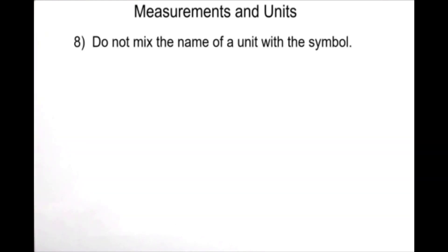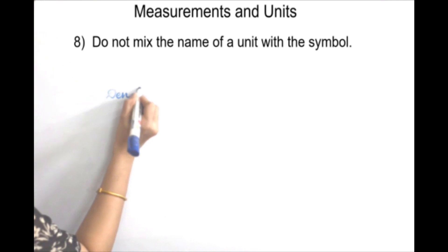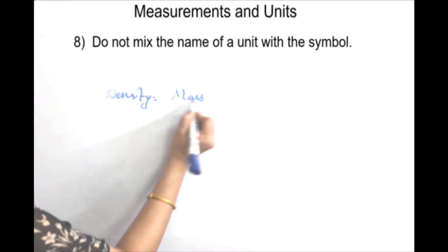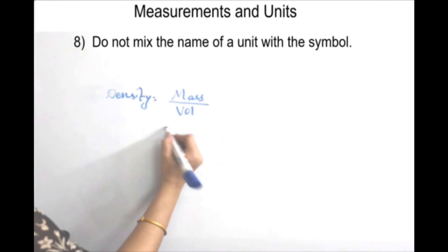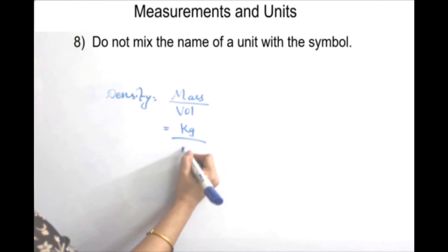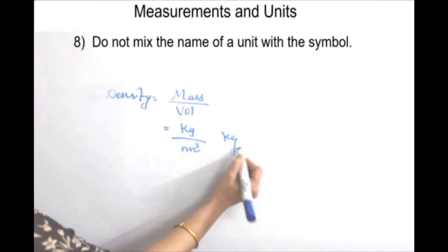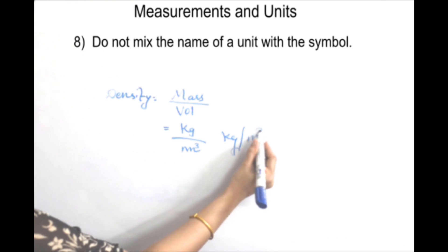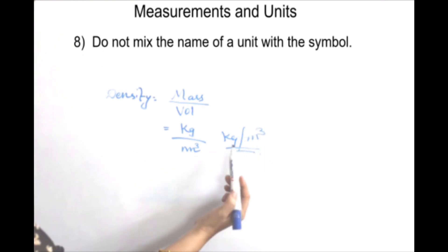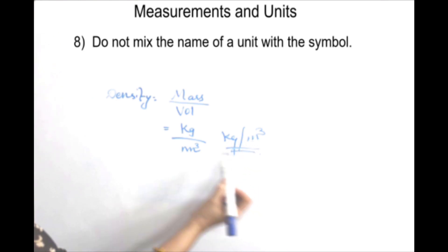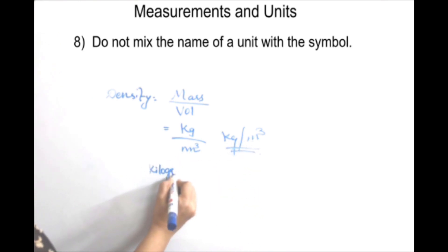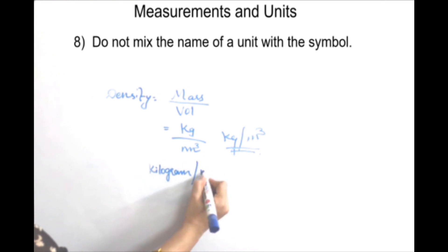In the 8th rule, you can use both the symbol and the name of a unit. For example, density equals mass by volume. Mass is kilogram divided by volume in meter cube. You can use the name of one unit — kilogram — and the symbol of the other — meter cube.